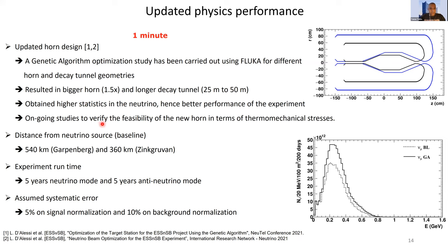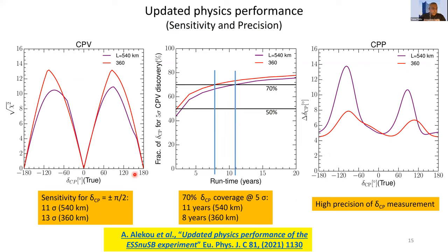We are simulating both baselines. For the experiment running time, we assume five years neutrino and five years antineutrino running mode, with systematic errors of 5% on signal normalization and 10% on background normalization. The CP violation discovery sensitivity as a function of true delta CP values for both baseline options shows that for maximal CP violation at plus or minus 90 degrees, the experiment sensitivity reaches approximately 10 sigma for the 540 km option and 13 sigma for the 340 km baseline.